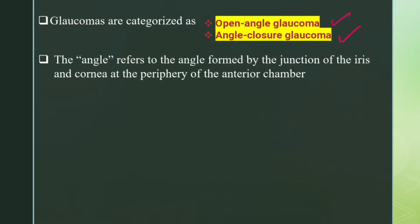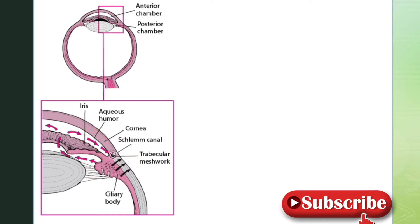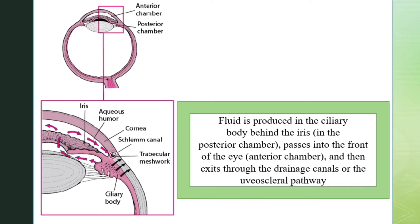The angle refers to the angle formed by the junction of the iris and the cornea at the periphery of the anterior chamber. Looking at the diagram, you can see the anterior chamber, the posterior chamber, the iris, the cornea, and the ciliary body. The aqueous humor is produced by the ciliary body, then passes anteriorly into the anterior chamber, and drains through the Schlemm's canal. An important structure around Schlemm's canal is the trabecular meshwork.